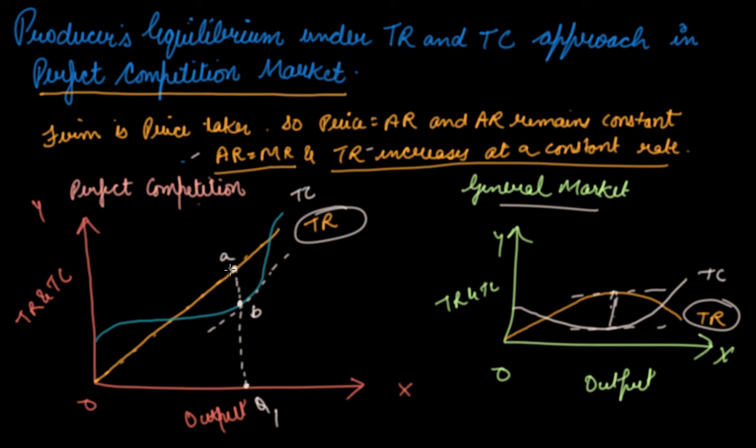This is how you find the producer's equilibrium in perfect competition using the TR-TC approach. I hope you liked the video. Please download the Scholars Learning app and enjoy the learning experience with us.